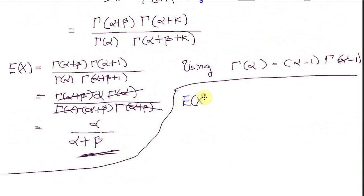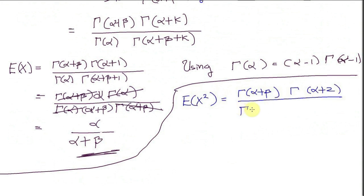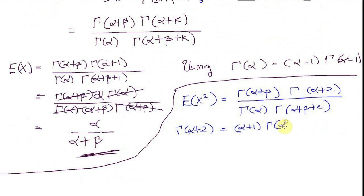For the second moment, the expected value of x squared, I plug in 2 instead of k in the general kth moment formula. That gives gamma of alpha plus beta times gamma of alpha plus 2, divided by gamma of alpha times gamma of alpha plus beta plus 2. I can write gamma of alpha plus 2 as (alpha plus 1) times gamma of alpha plus 1, and gamma of alpha plus 1 as alpha times gamma of alpha.